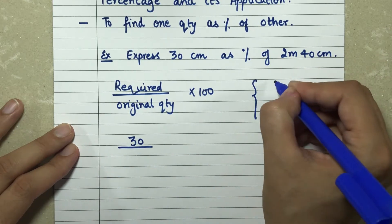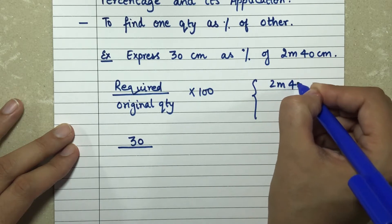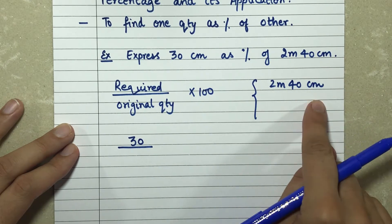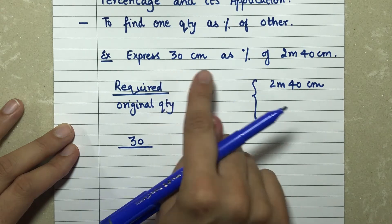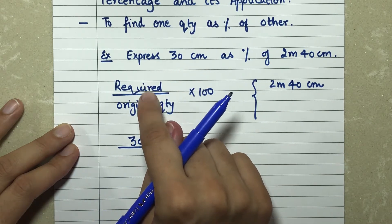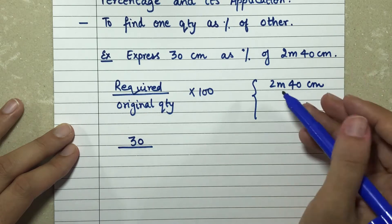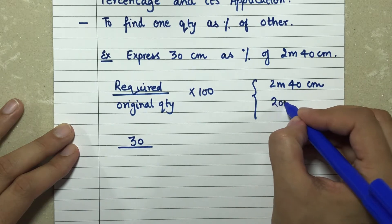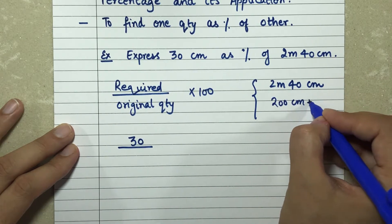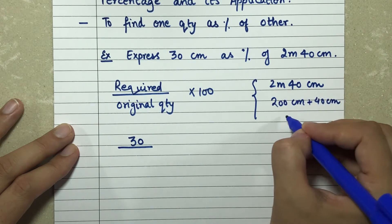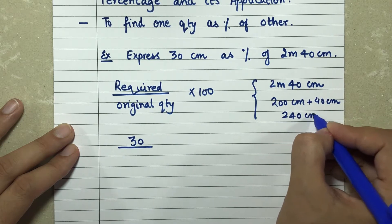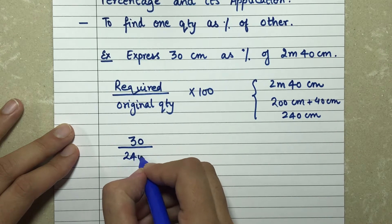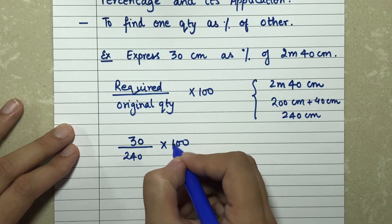My original quantity is 2 meters 40 centimeters. I need to convert it into centimeters so both values have the same units. 2 meters 40 centimeters = 200 centimeters + 40 centimeters = 240 centimeters. So the expression becomes 30 upon 240 into 100.